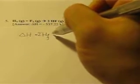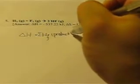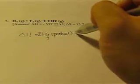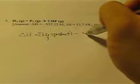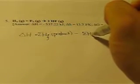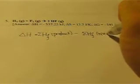And it is the sum of the heat of formation of the product minus the sum of heat of formation of the reactant.